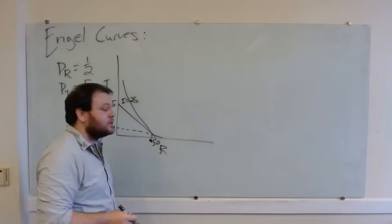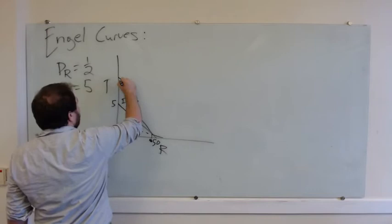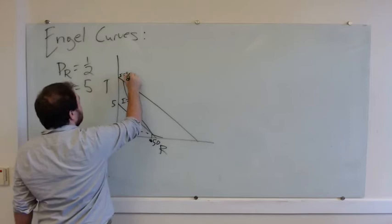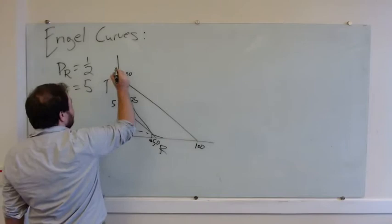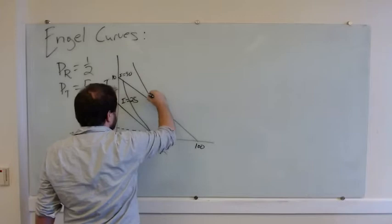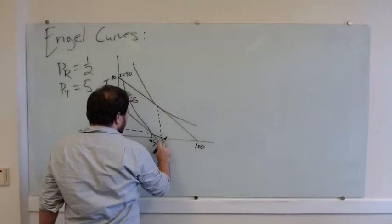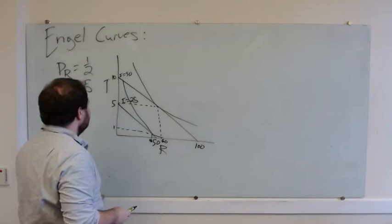Then we could say, what would you do if you had a higher income? Let's say that your income was 50 bucks. In that case, you could afford up to 100 packets of ramen. You could afford up to 10 slices of avocado toast. So let's say that in that case, you would buy more of both, maybe you would get 60 packets of ramen, and then you would have enough money left over to buy five slices of avocado toast, if I'm doing that math correctly.